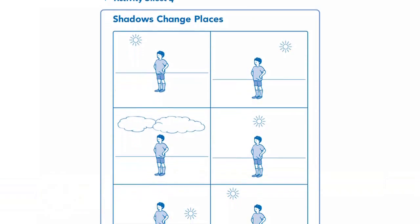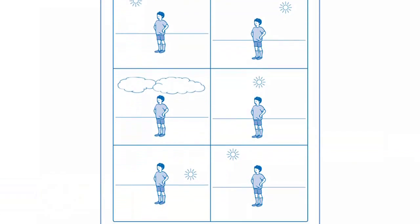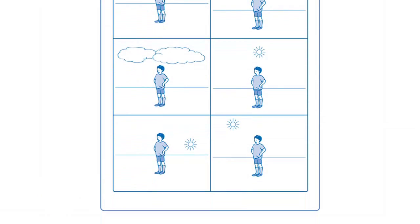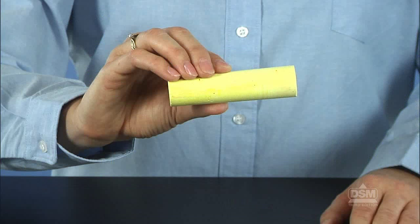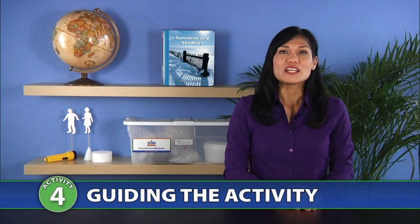To prepare for Session 3, make a copy of Activity Sheet 4 for each student. Each team of two will need a piece of yellow chalk. To begin Session 3, give each team of two a piece of yellow chalk and take the class outside to the same location, this time in the late afternoon.